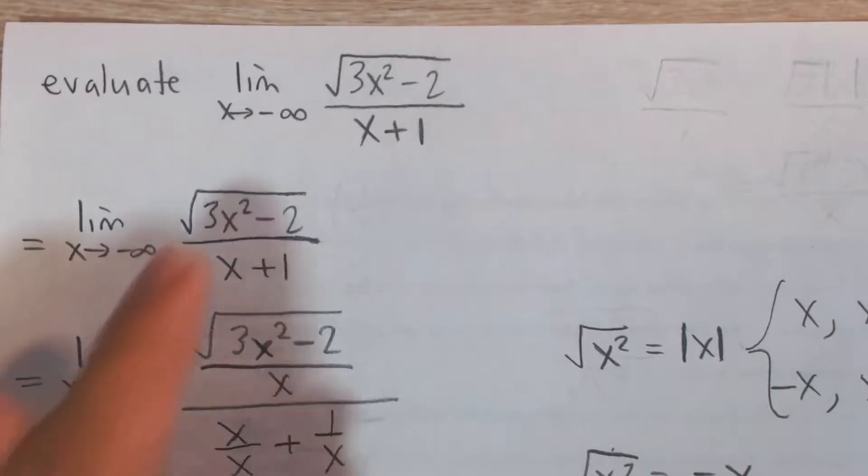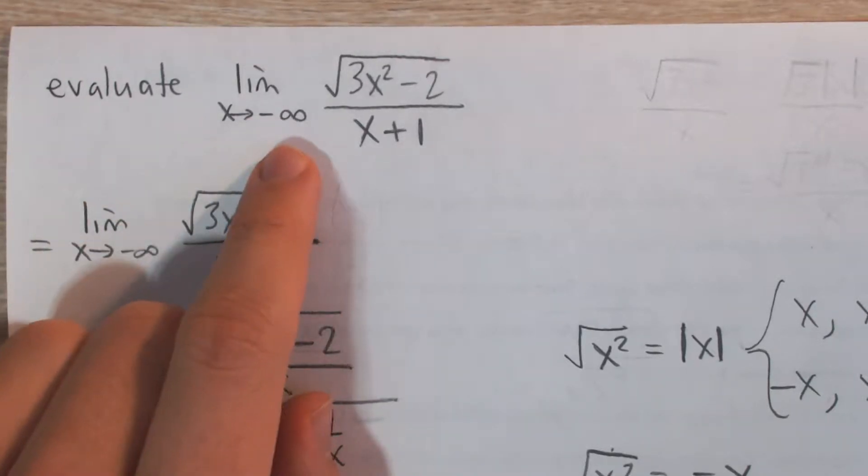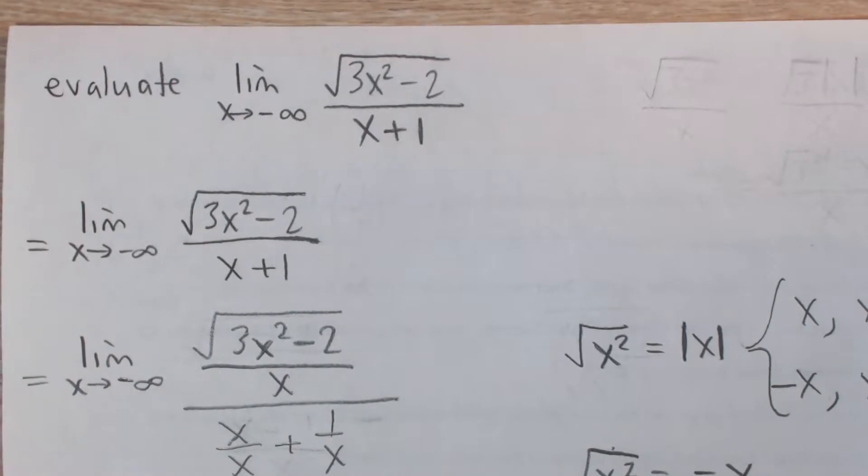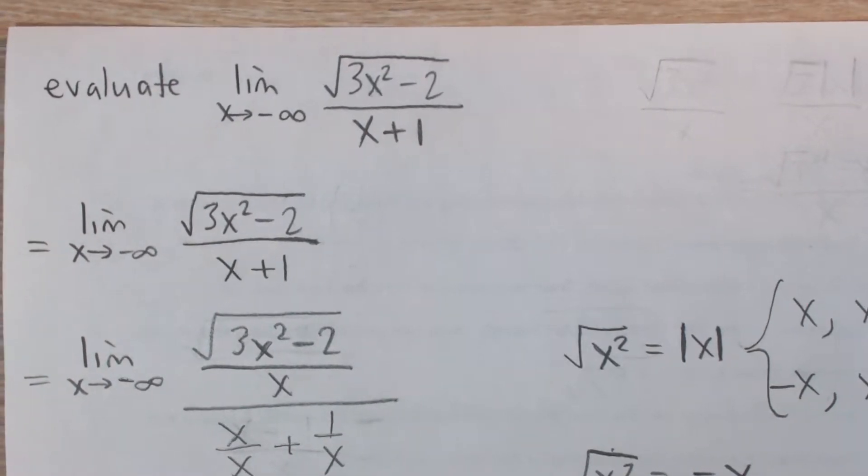Okay, so here we have to evaluate the limit as x goes to negative infinity of square root 3x squared minus 2 divided by x plus 1.